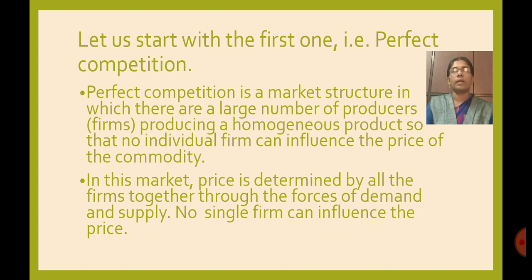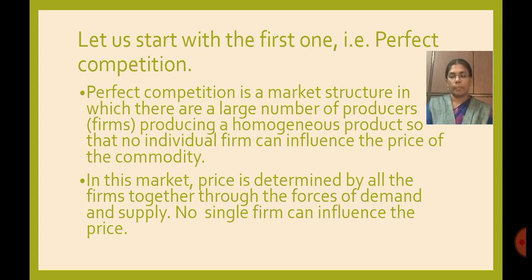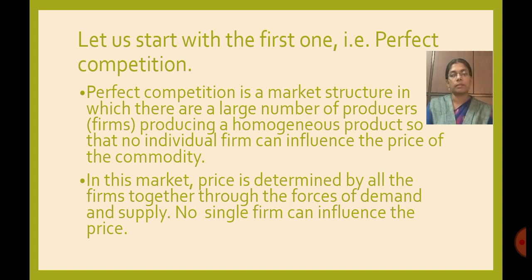Let us explain each one. The first is perfect competition. Perfect competition is a market structure in which there are a large number of sellers as well as buyers of a commodity, and the commodity is homogeneous or identical, such that no individual firm can influence the price. There will be a large number of buyers and sellers, no individual seller can influence the price, and the commodity produced will be identical in all respects.